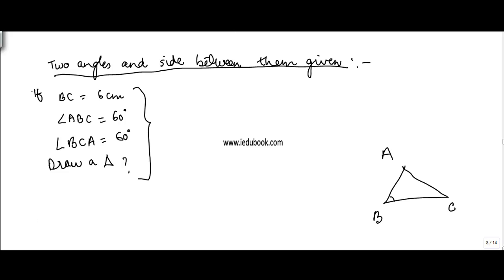So you know that two angles are 60 degree, this angle is 60 degree, this angle is 60 degree, this side is 6 centimeter. Now you need to draw this triangle. So this is a rough sketch, let's draw it.